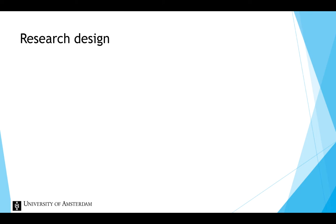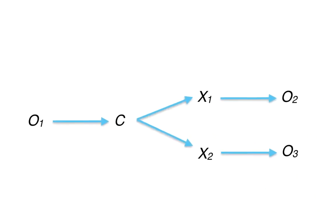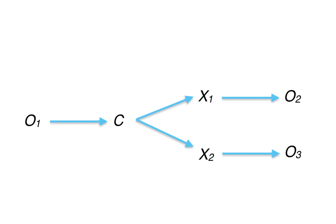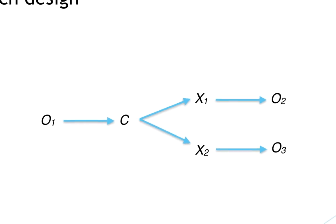The research design appropriate for regression discontinuity analysis can be visualized with a scheme. O1 is a pre-measure of the dependent variable. C indicates that participants are assigned to conditions on the basis of a cut score — in other words, they are assigned to one of the conditions depending on whether their pretest score O1 is below or above the cut score. X represents the independent variable, so X1 could be the treatment condition and X2 the comparison condition. O2 and O3 are post-measures of the dependent variable, also called posttest scores.